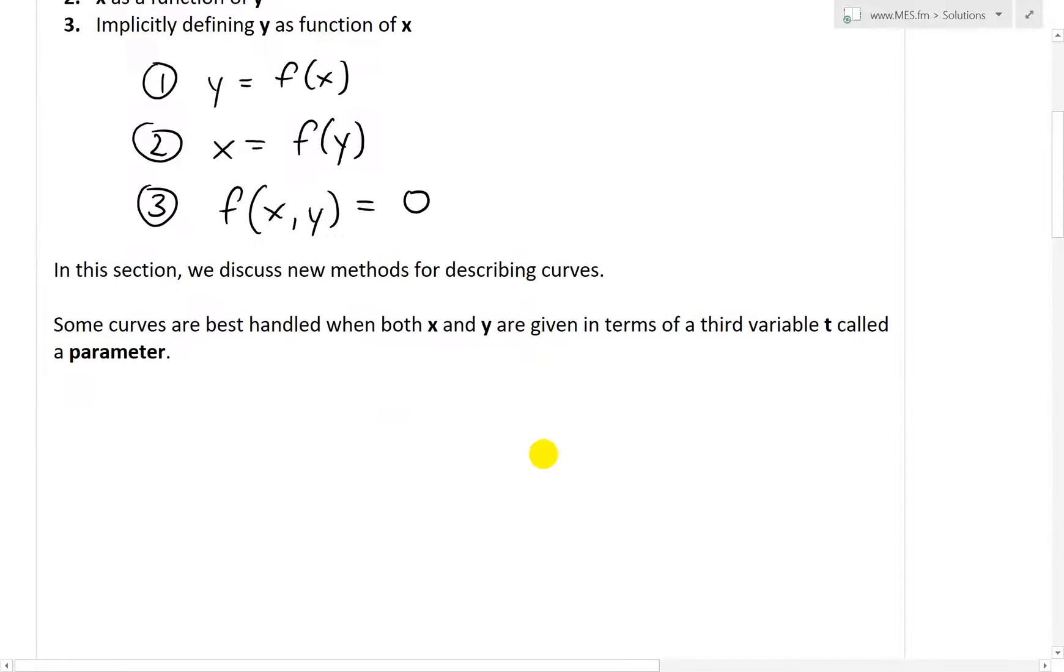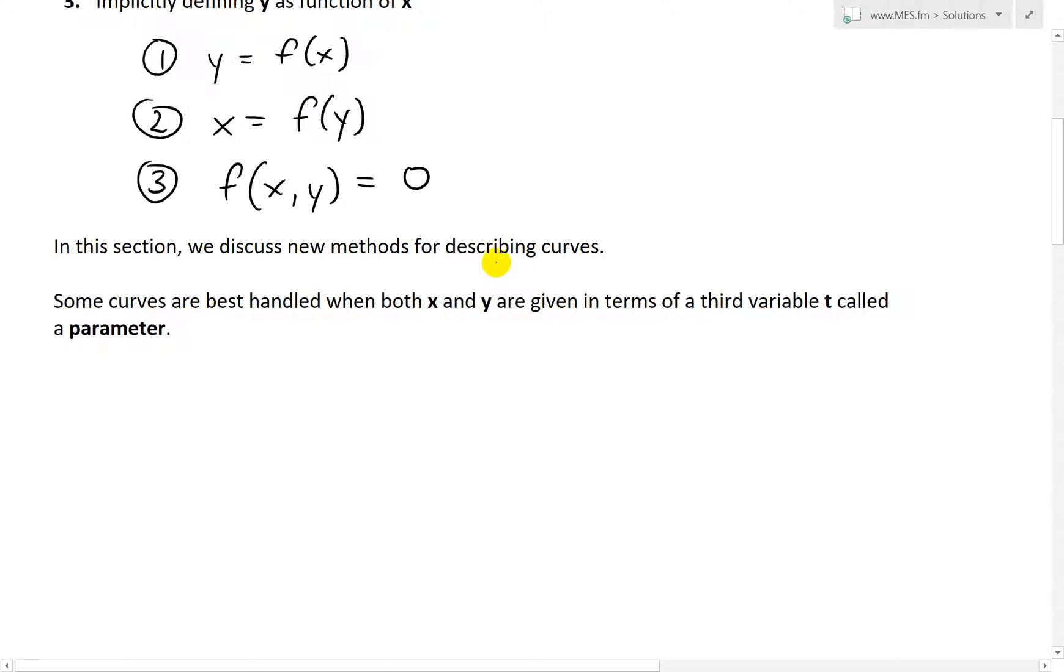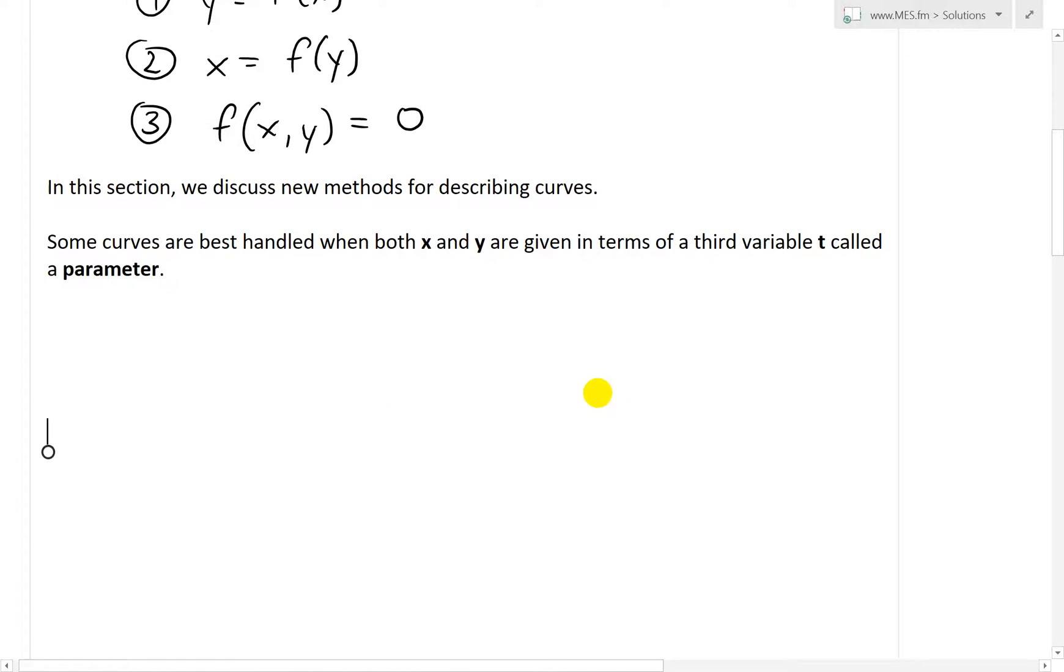But now in this section we discuss new methods for describing curves. Some curves are best handled when both x and y are given in terms of a third variable t called a parameter. I'll show an example of such a curve. Basically we're introducing a new variable t called the parameter for each of these x and y, so we'll have x as a function of t, as well as y equal to a function of t.